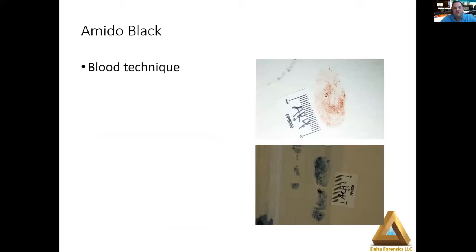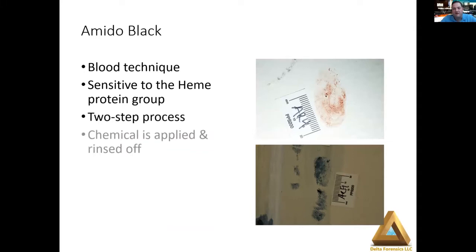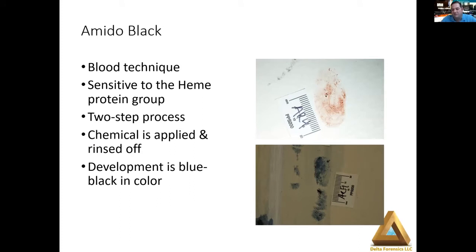Breaking into amido black a bit further: it's sensitive to the heme protein group and is a two-step process. When you encounter an impression such as the photograph on the top — where you have potential blood stains — the chemical is applied and rinsed off, and the development is blue-black in color, as seen in the photograph on the bottom, which is post-development.